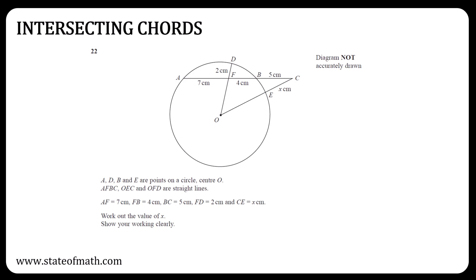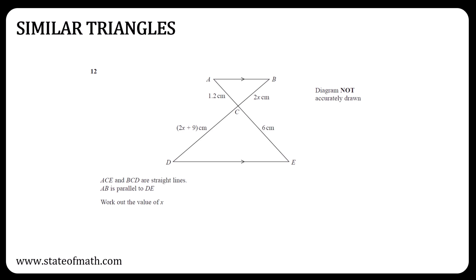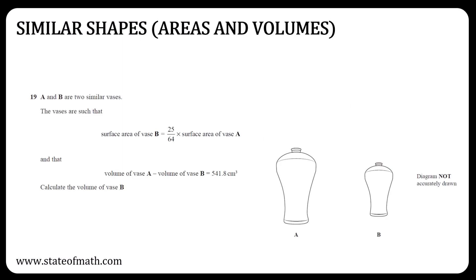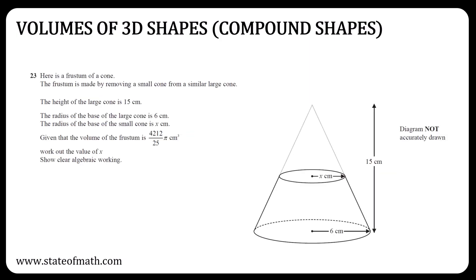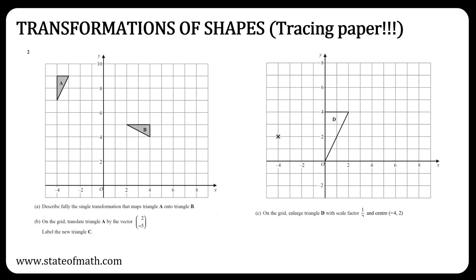Intersecting chords is another topic that does not appear that often. I have chosen this question because it was one of the trickiest questions on this topic. Similar triangles questions are usually straightforward when appearing on their own. If they want to make things tricky, they can either include areas and volumes of similar shapes or have a frustum question. This could appear as a cone or as a pyramid.